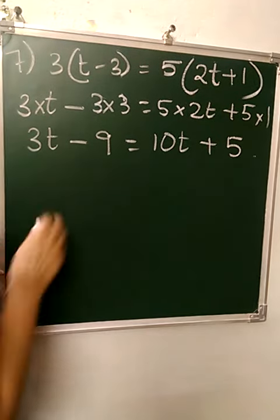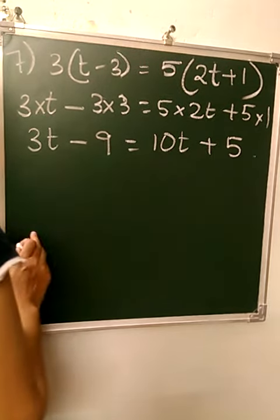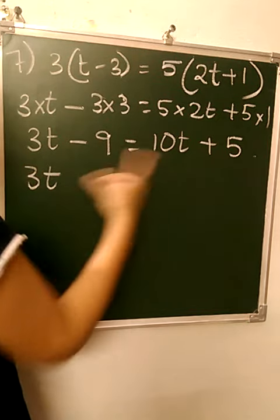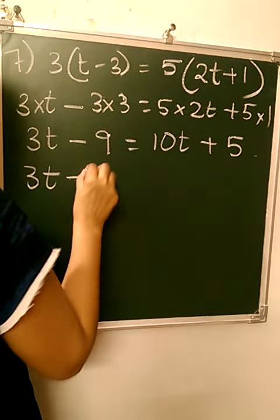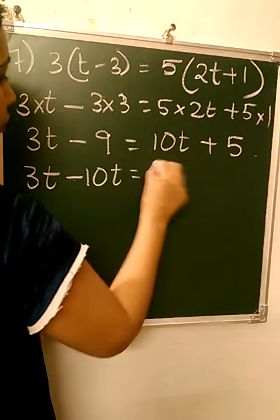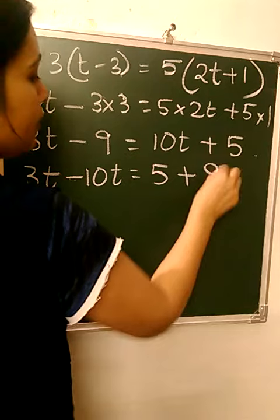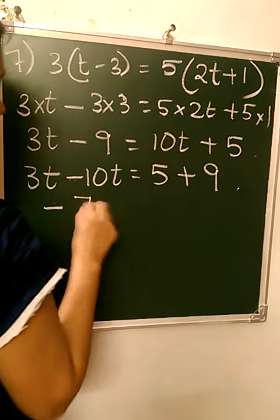Now variables on one side, constants on the other. 3t remains 3t. 10t will come here. It is transposing, so its sign will change. 5 will remain 5. This minus becomes plus.